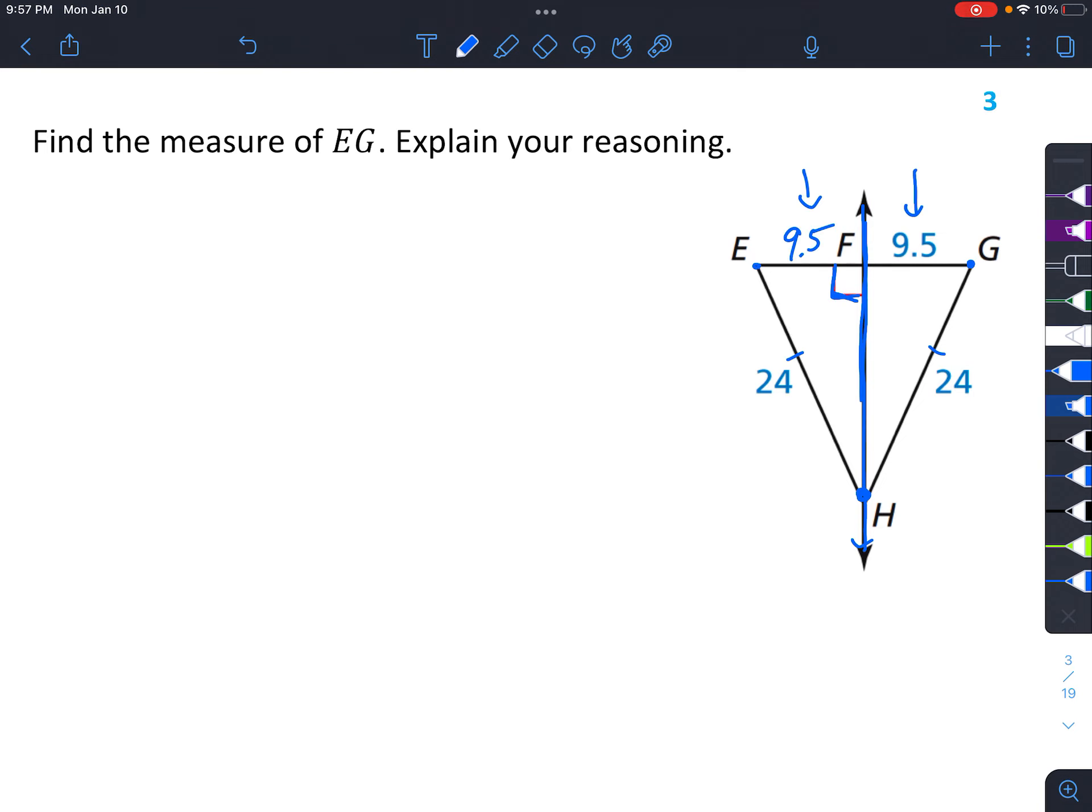So to get EG, we could say EG equals EF plus FG. And just notice that EF is now 9.5, FG is also 9.5, and when you add those together, you get 19. And that's your answer.